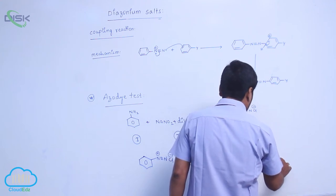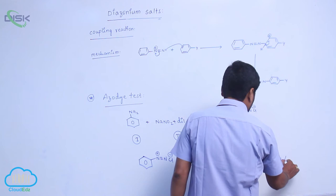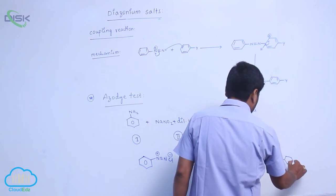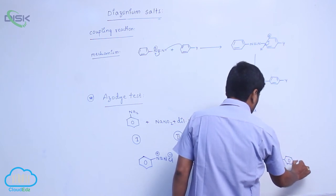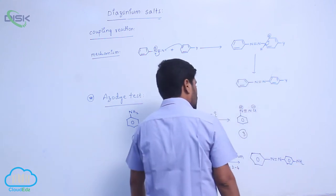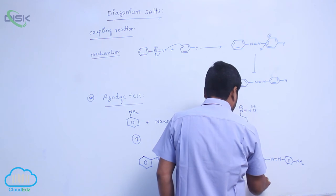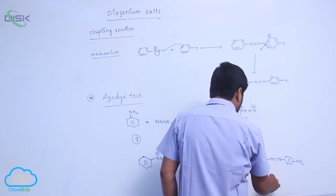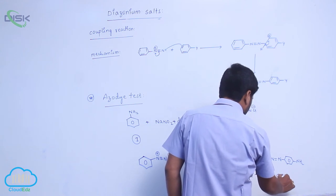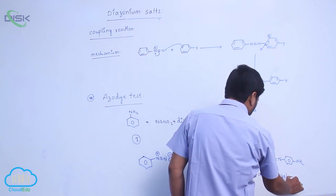N double bond N. Here is what? NH2. This is known as para-amino-azobenzene.